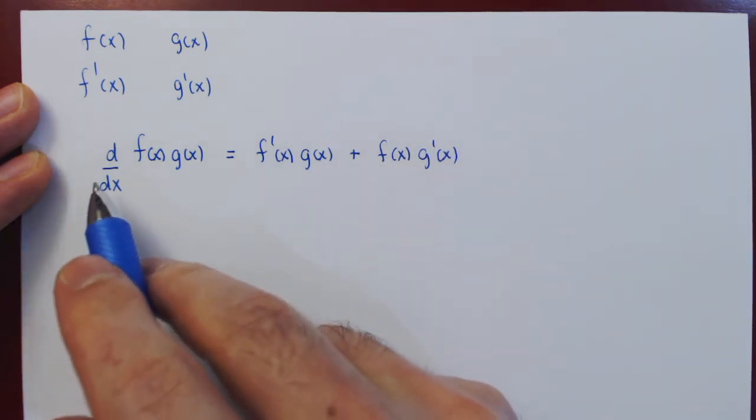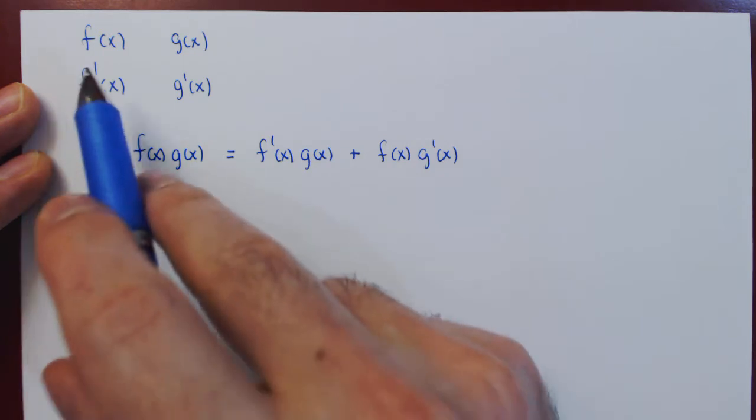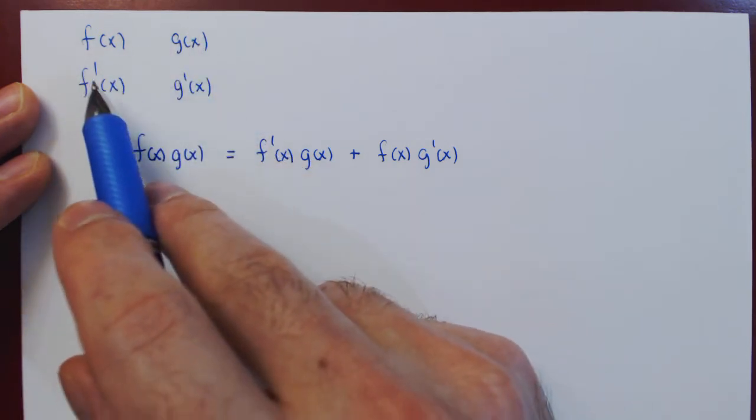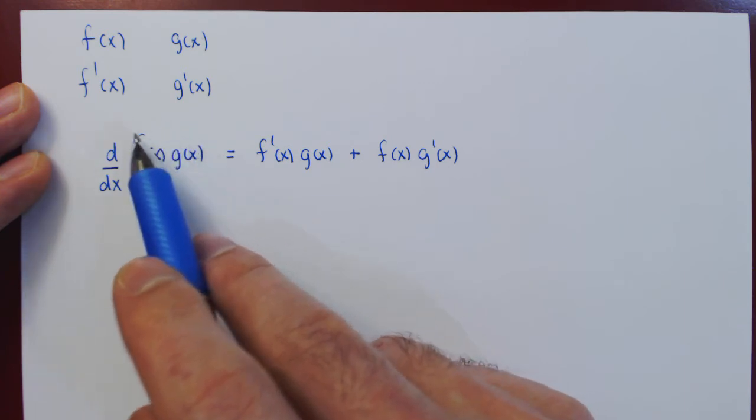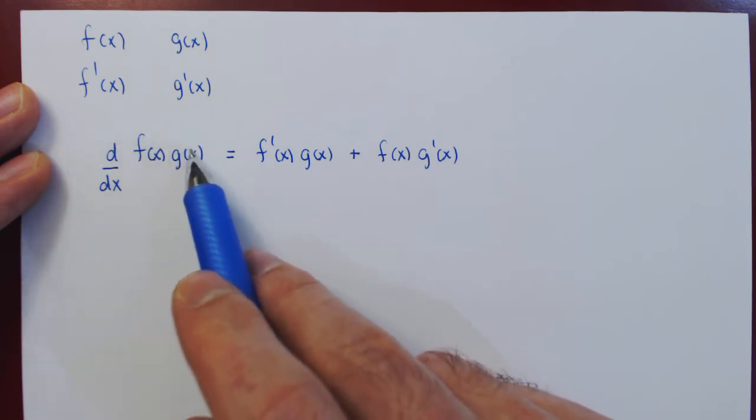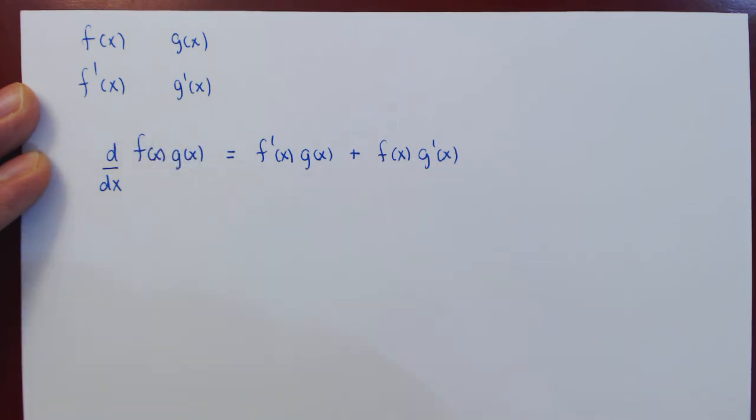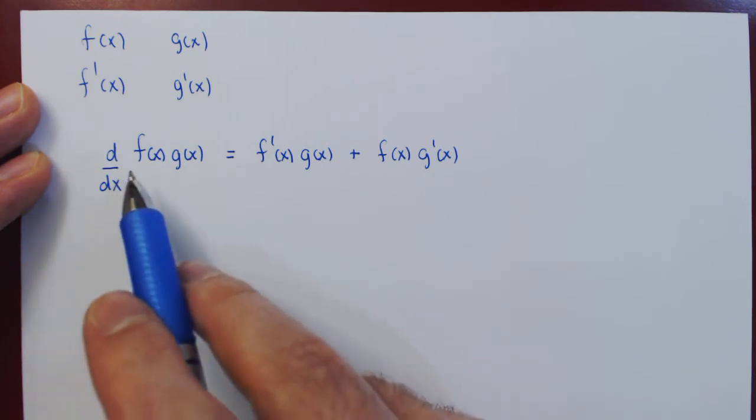And this is known as the product rule of differentiation. So if we have two functions, and we know how to differentiate each respective function, then we can differentiate the product of the two original functions using the so-called product rule.